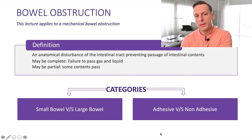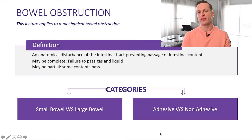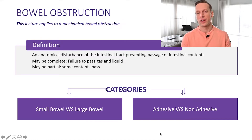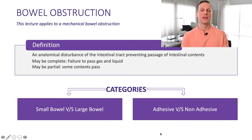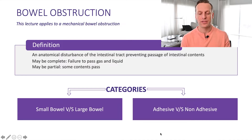First of all, what we're going to be talking about today are mechanical bowel obstructions. Those are different from functional bowel obstructions, which you may encounter — things like an ileus after surgery, or what's known as acute colonic pseudo-obstruction or Ogilvie syndrome. These are situations where there isn't actually a mechanical blockage, but the patient is acting functionally as if they're obstructed.